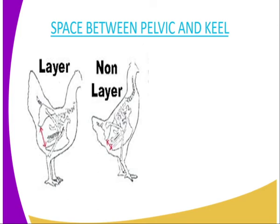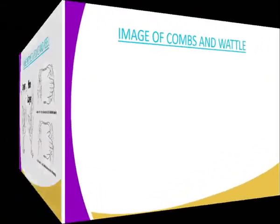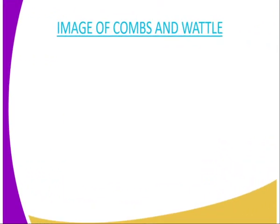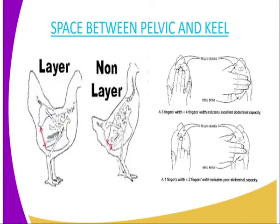You can see in the diagram the space between the pelvic bones. For a good layer, there is a wider space, and for a non-layer there is a smaller space. One finger fits for a non-layer, while three fingers fit for a good layer. The fingers are supposed to fit exactly in between that space.